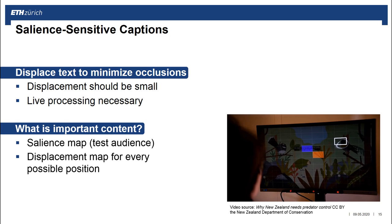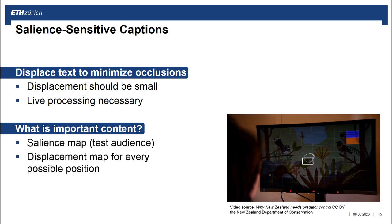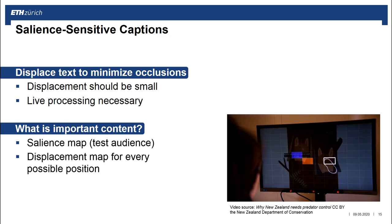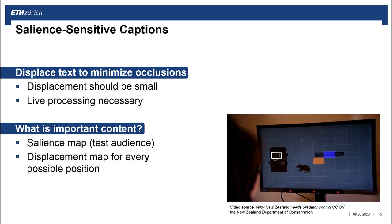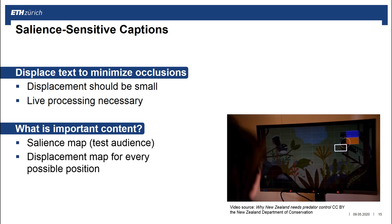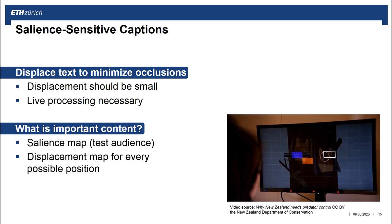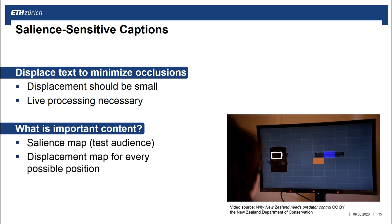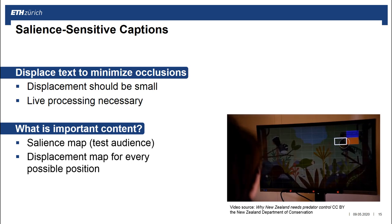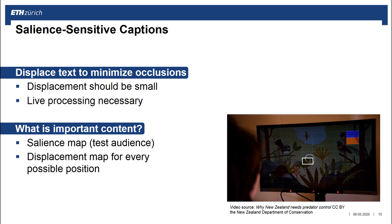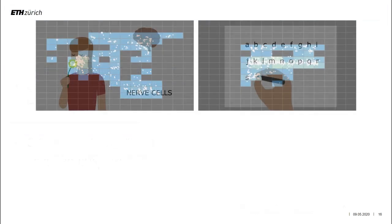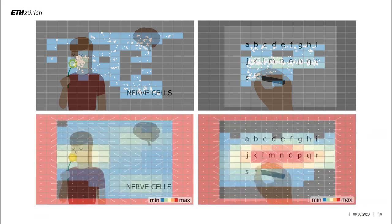The orange cell shows the gaze position, the purple cell shows the displacement. As you can see, this approach has reduced the occlusions with the birds. We can create such displacement maps for arbitrary videos, as long as we have information about salient regions in the video.